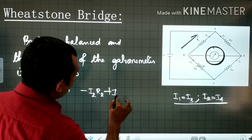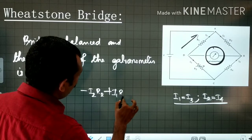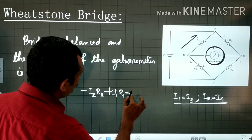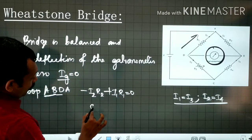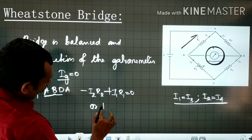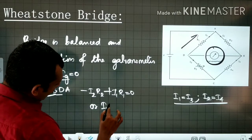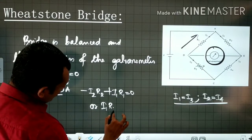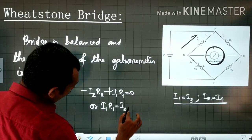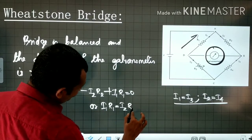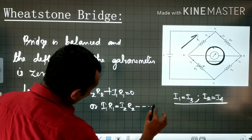Looking at loop ABDA: plus I1 R1 is equal to zero. Or I1 R1 is equal to I2 R2. That is equation number one.